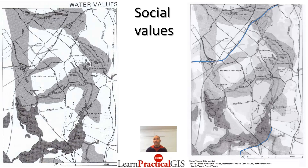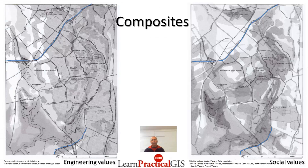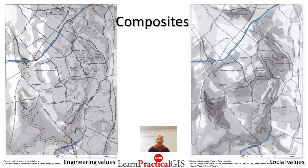Water values is an important one because when constructing and running the roadway you don't want your local streams polluted, so water values are a significant social consideration. Wildlife values is a pretty obvious one as well. So we end up with these two composite maps — engineering values on the left and social values on the right. You can see there are some lighter areas in both, though not quite transparent, lighter than many other places.